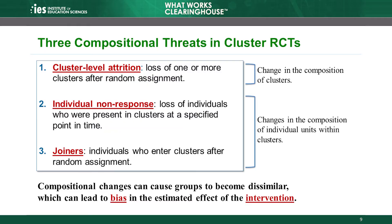Finally, the composition of individuals within clusters may change when individuals enter or join the clusters after random assignment. For example, a study may have randomly assigned classrooms to conditions in the fall of the school year and measured the achievement outcome in the spring. Some students may have transferred into study classrooms mid-year from other classrooms or from other schools. If the study included these students in the analytic sample, then outcomes were analyzed for some students who were never subject to random assignment.